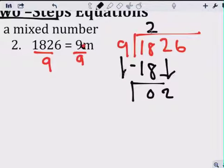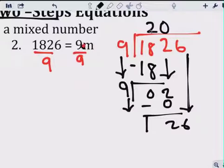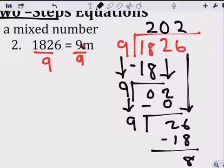Bring down the 2, now when you bring down a number, you need to bring down this side, 9 can't go in, you have to put a 0. So, 0, subtract 2, bring down the 6, now you bring down a number, you need to bring down the 9, 9 into 26 is 2 times, 18, subtract, that's a remainder of 8.